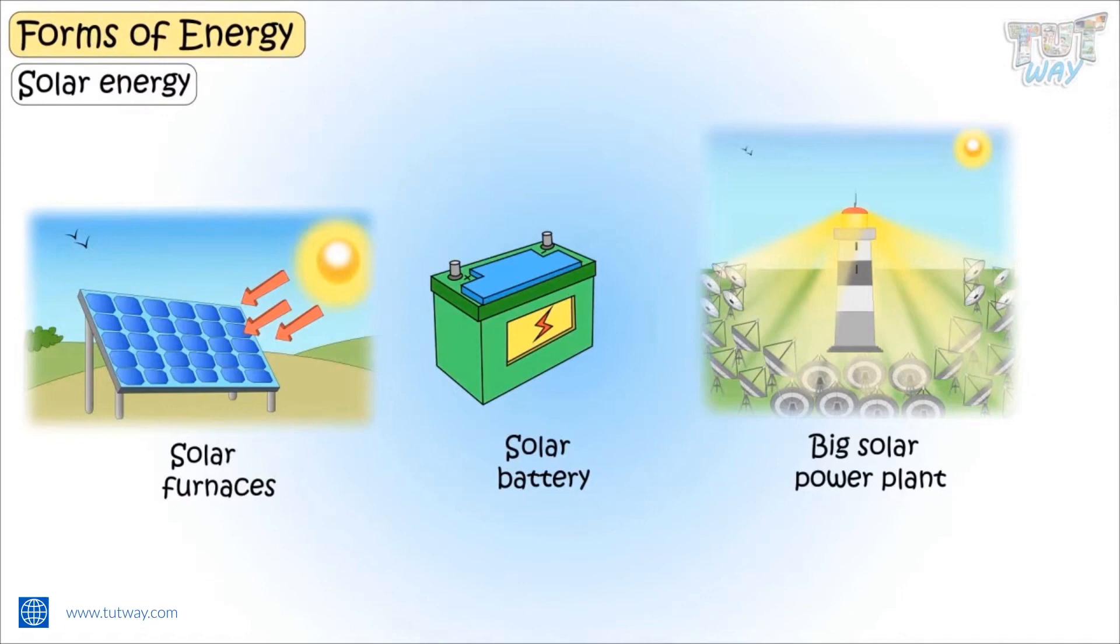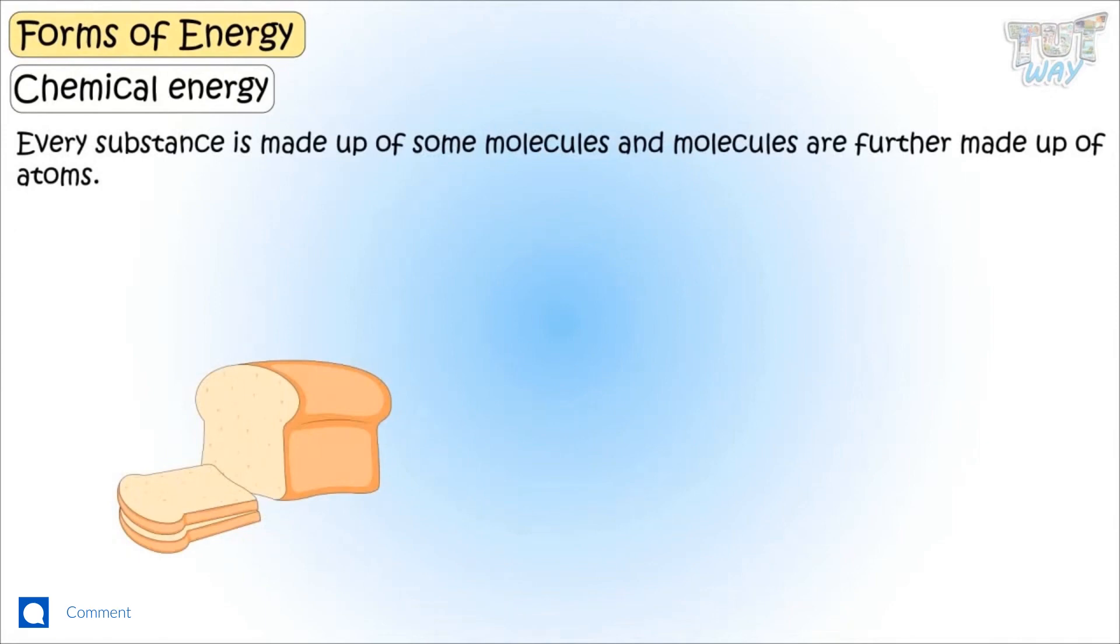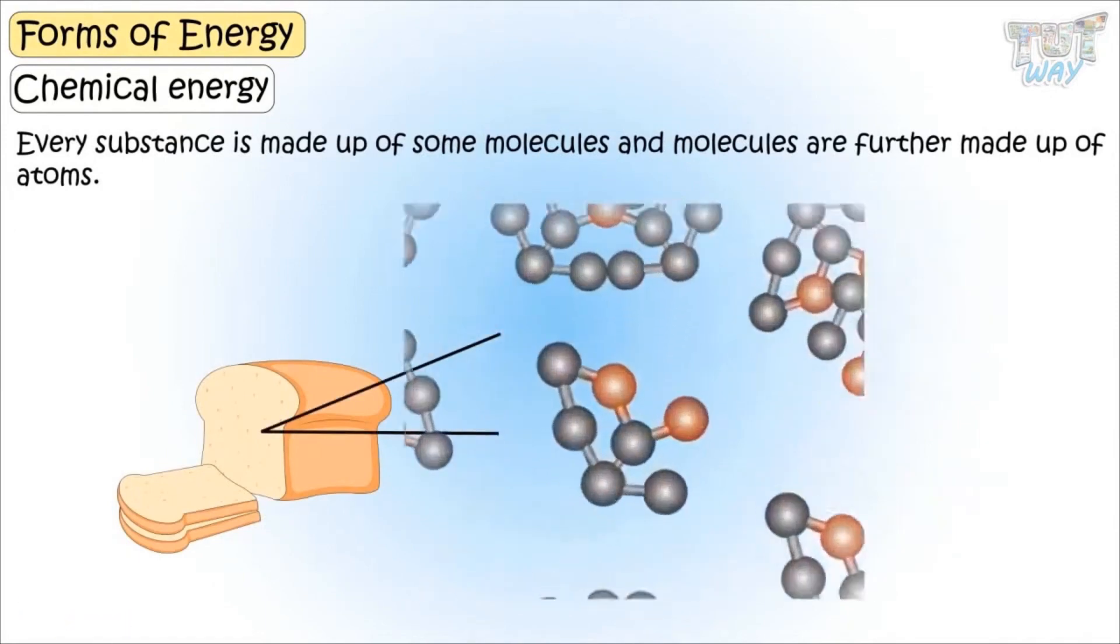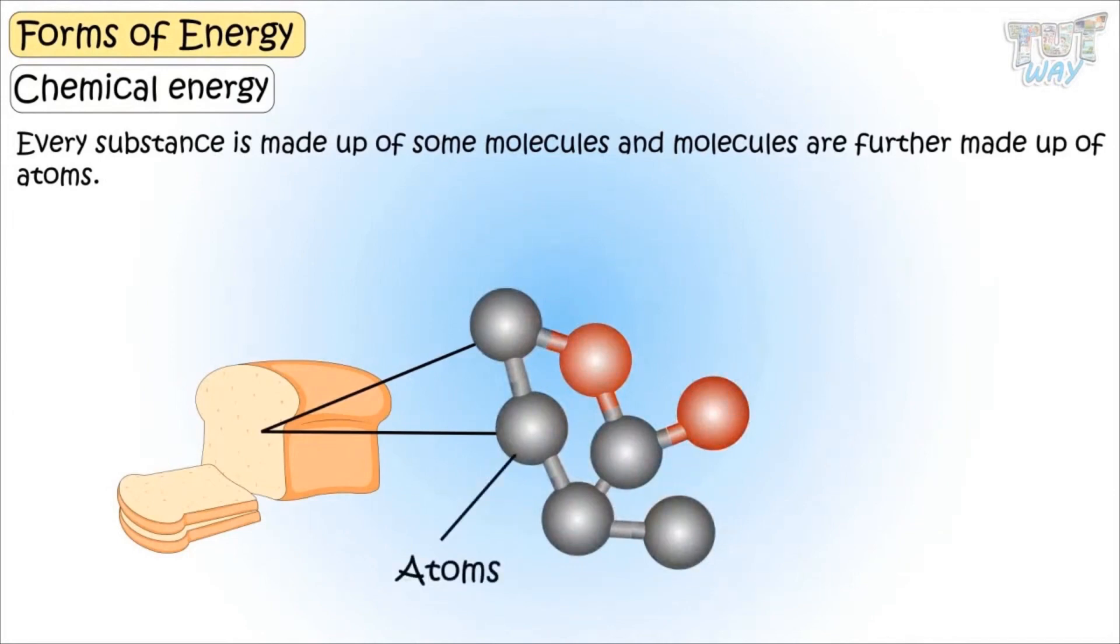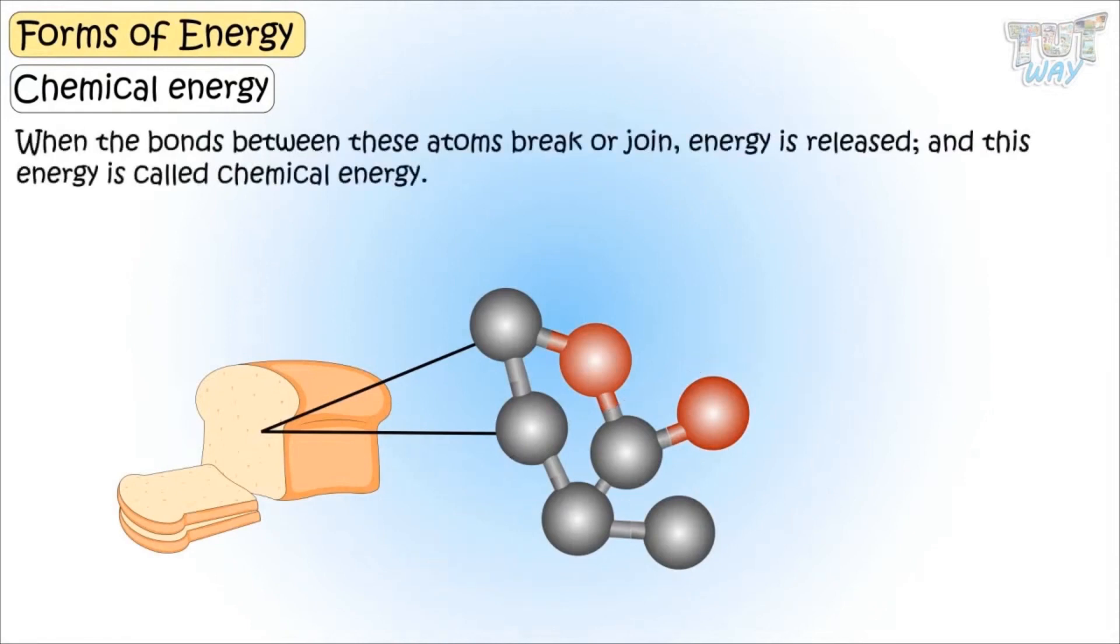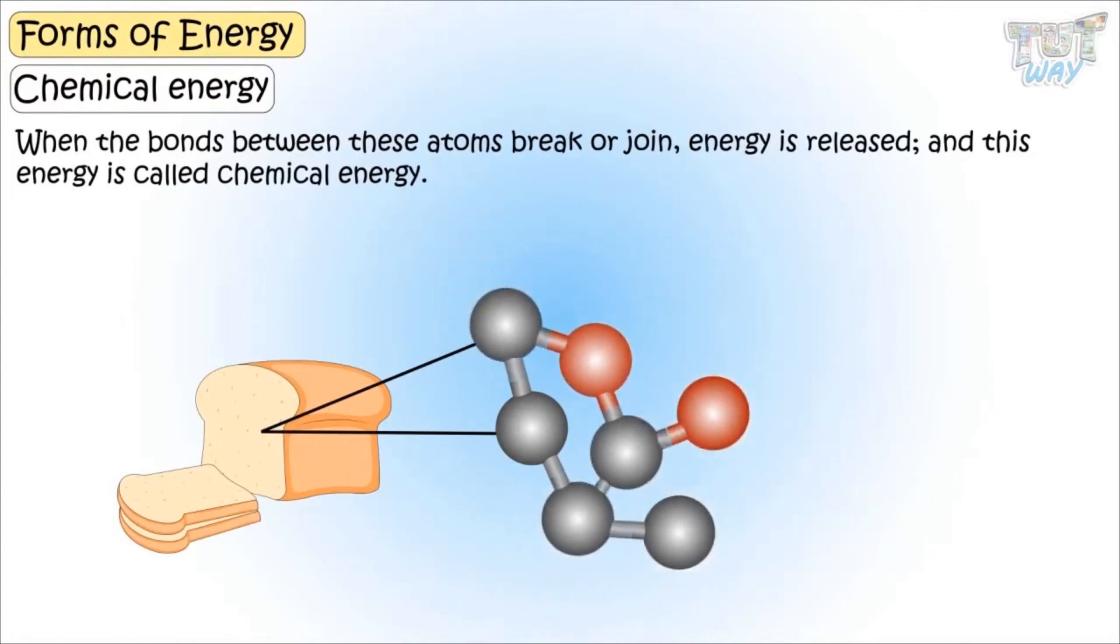Now let's learn about chemical energy. Every substance is made up of some molecules and the molecules are further made up of atoms. And these atoms and molecules are joined together with some bonds. And chemical energy is stored in the bonds between these atoms and molecules. When the bonds between these atoms break or join, energy is released. And this energy is called chemical energy.